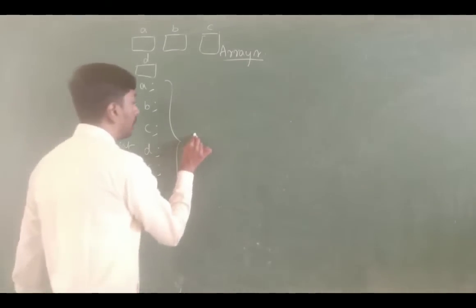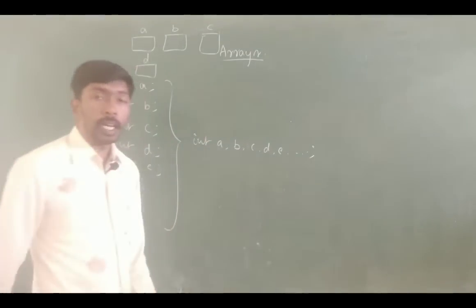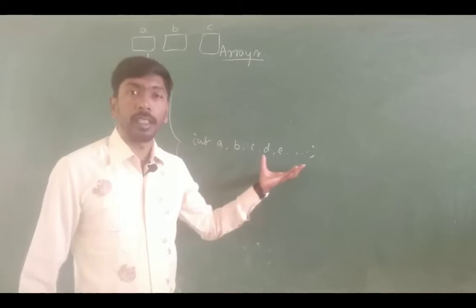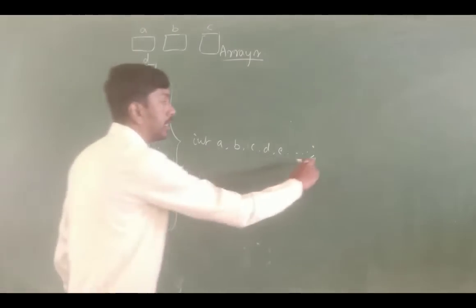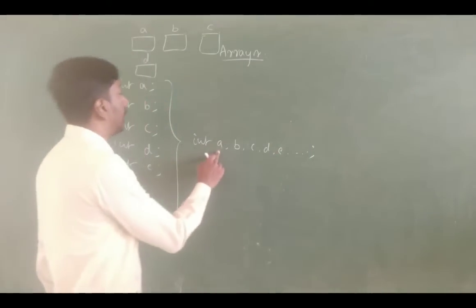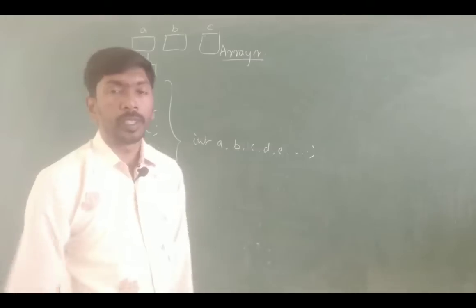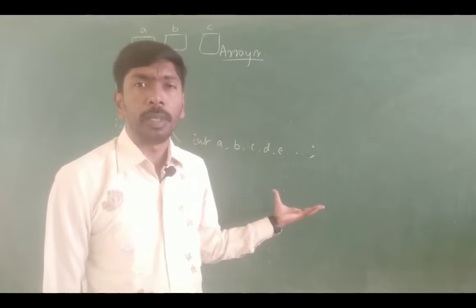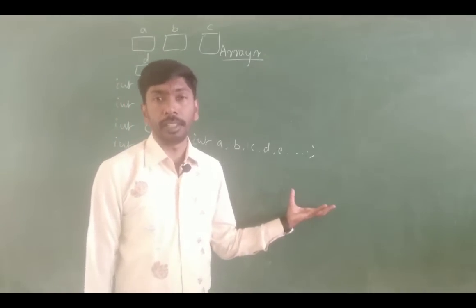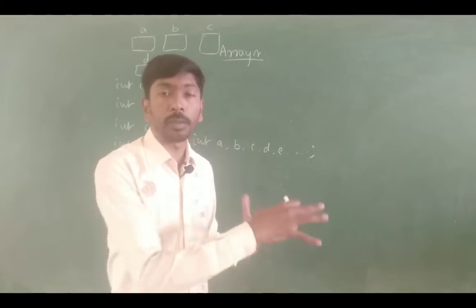To overcome that problem, they introduced using a comma operator: integer a, b, c, d, e, and so on. Using the comma operator, we can create the memory blocks in a single line. But even that has a small problem — five variables are okay, ten variables are okay, but if I need twenty, fifty, or a hundred variables, it is a waste of time.